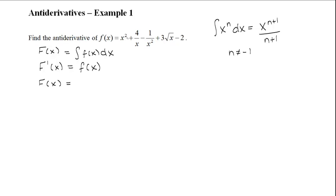So for that first term, we have x squared. When we add 1 to the 2, we're going to get x cubed, and then we divide by 3. So we have x cubed divided by 3.